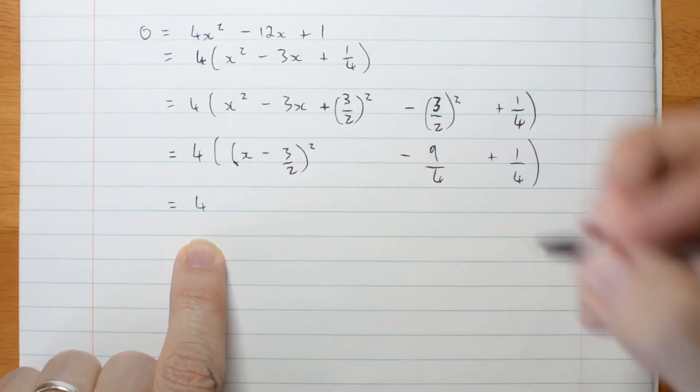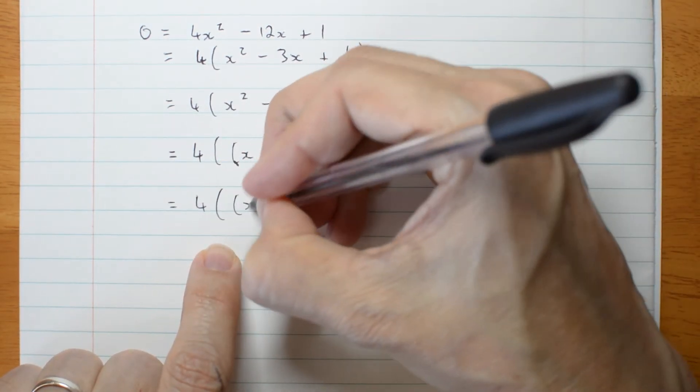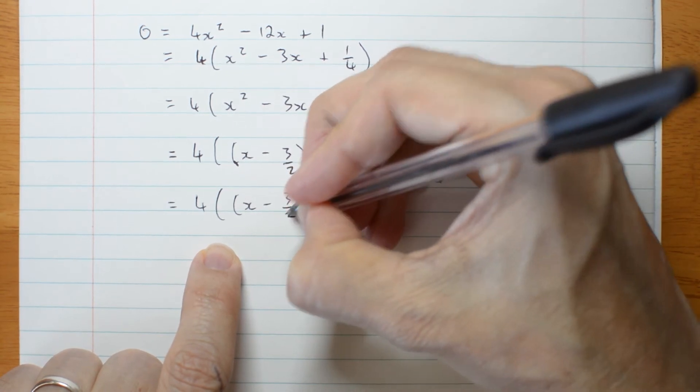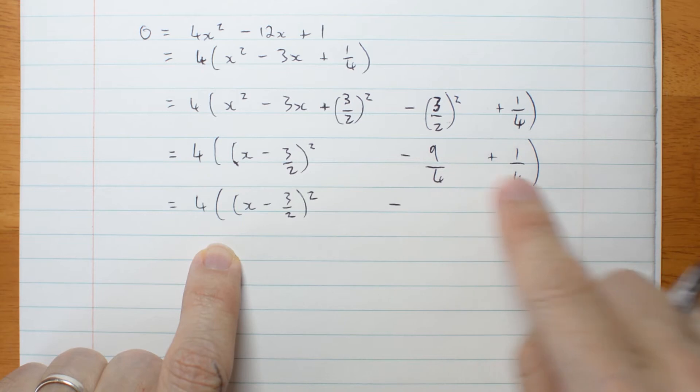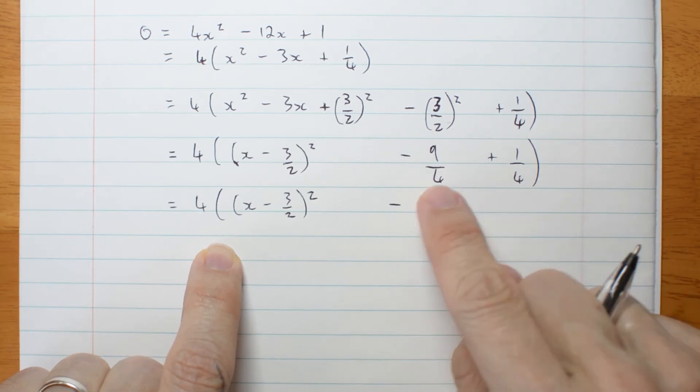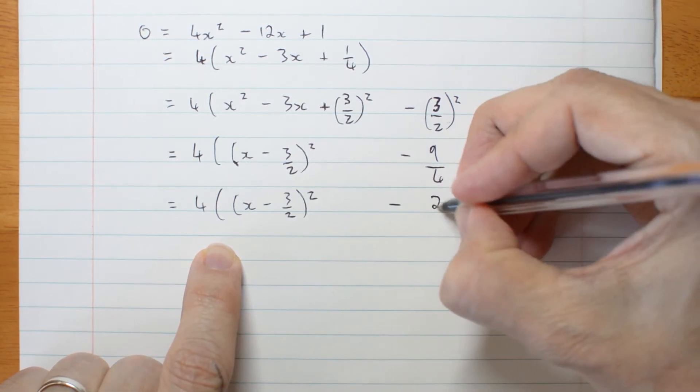OK. So, x minus 3 on 2 squared minus 9 on 4 plus 1 on 4 is negative 8 on 4, which is 2.